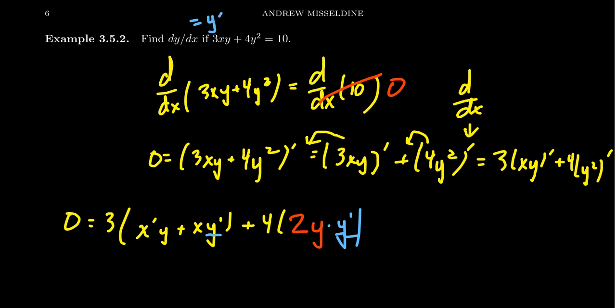So what we're going to do is we're going to move anyone who's not a multiple of y prime onto the left-hand side of the equation. Before we do that, let's distribute the 3 here and multiply the 4 by the 2 right here. So we end up with 3 x prime y plus 3x y prime, and then we're going to have 8y y prime.